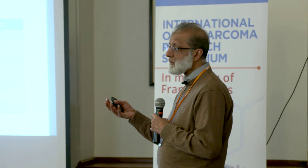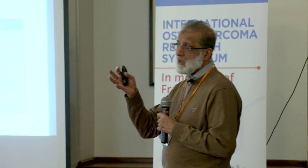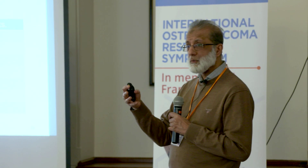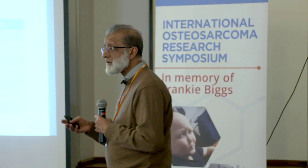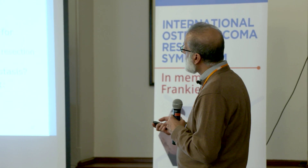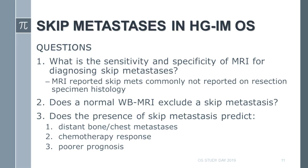It's fair to say we really don't know the true sensitivity and specificity of MRI in identifying skip lesions, because the majority are not identified or not reported on the resection specimen histology for a variety of reasons, and we don't routinely biopsy them unless they will make a major difference to surgical management. Key questions include: what is the sensitivity and specificity, does a normal whole bone MRI exclude a skip metastasis, whether skip metastases are predictive for distant bone and chest metastasis, whether they predict chemotherapy response, and whether they are predictive for a poor outcome.